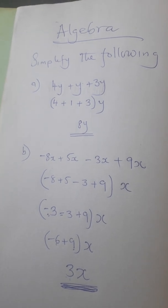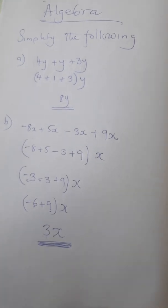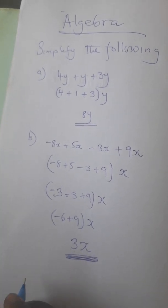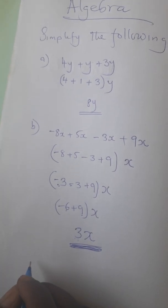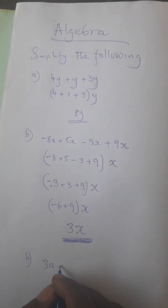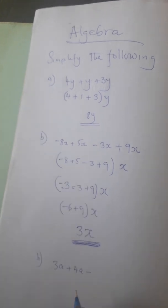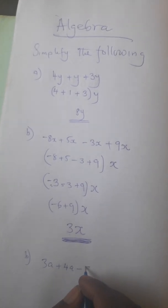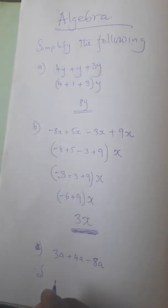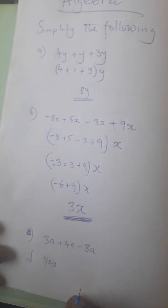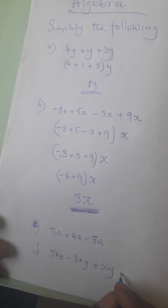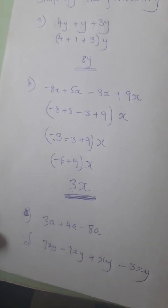I'm working out examples so you can see what we are going to be doing. Now let me give you something to try, to see if you have picked up something from these examples. Try (c): 3a + 4a − 8a. And for (d): 7xy − 9xy + xy − 3xy. Try out those two.